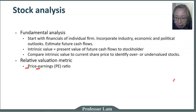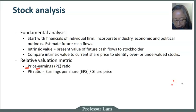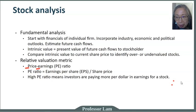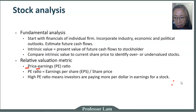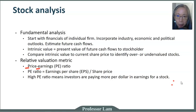A PE ratio is computed as the earnings per share — EPS, an abbreviation you'll hear a lot in stock market discussions — divided by the price of the stock. A high PE ratio means investors are willing to pay a higher price for a particular stock. A stock with a high PE is sometimes referred to as expensive, and a stock with a low PE is sometimes referred to as cheap.